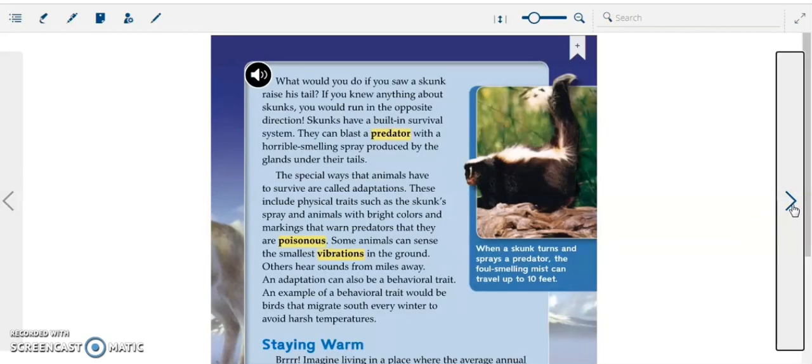What would you do if you saw a skunk raise his tail? If you knew anything about skunks you would run in the opposite direction. Skunks have a built-in survival system. They can blast a predator with a horrible smelling spray produced by the glands under the tails. The special ways that animals have to survive are called adaptations.